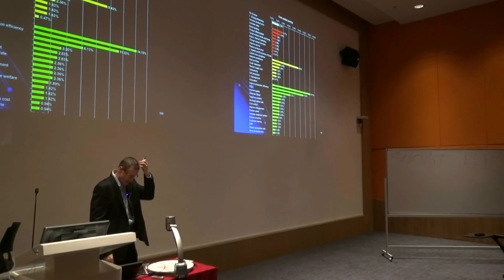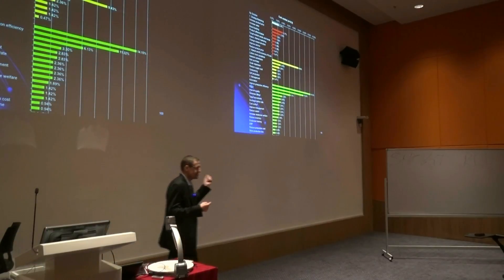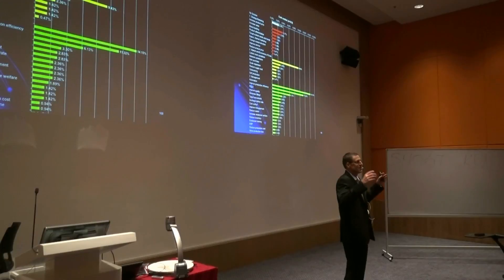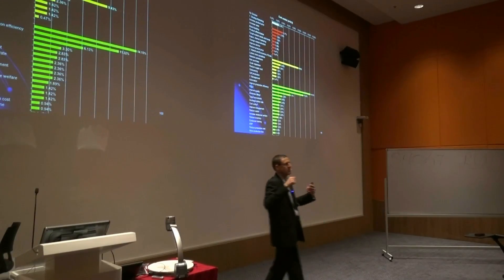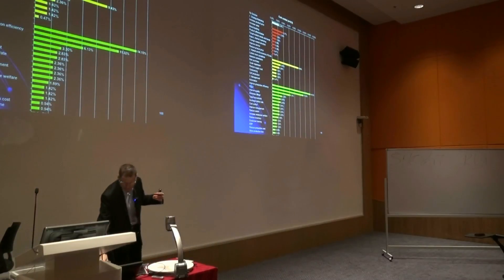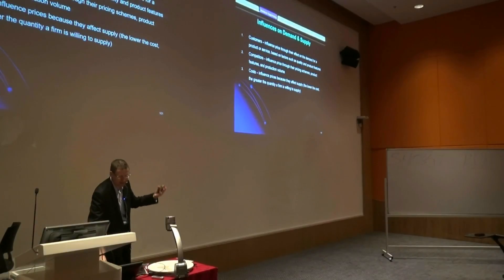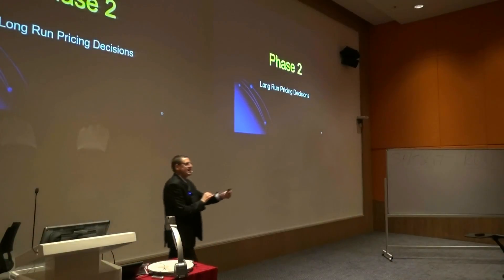This is something that's not in your PowerPoint slides and not examinable, but I just want to show you the reality of what Chapter 13 is talking about. So: influences on demand and supply — customers, competitors, and costs. Let's move on to phase two.